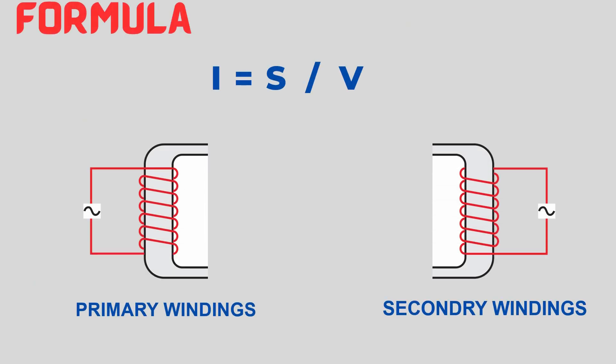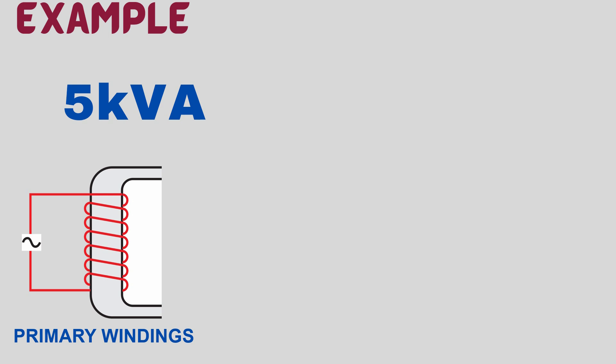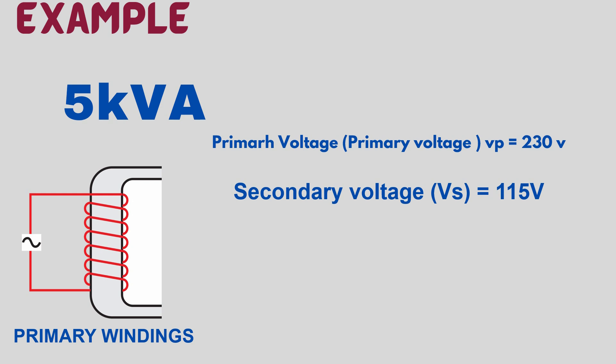For example, suppose we have a 5 kVA transformer with primary voltage 230 volts and secondary voltage 115 volts. Calculate primary current: put the values in the formula, 5000 divided by 230, so the answer becomes 21.74 amperes. So the primary full load current is 21.74 amperes.